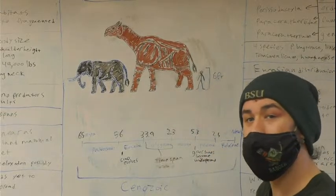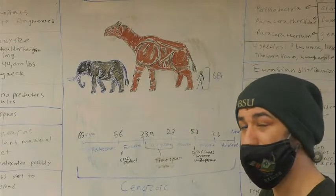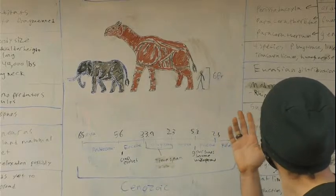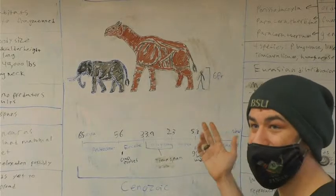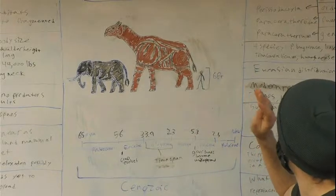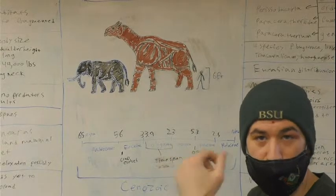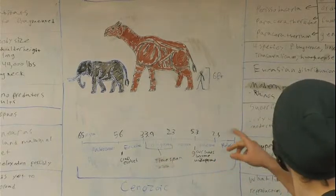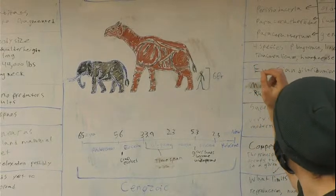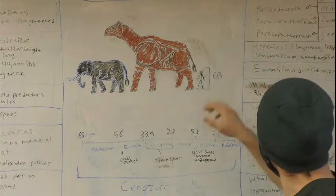So Paraceratherium lived roughly 34 to 23 million years ago and they're mammals. They're in the order Perissodactyla, the odd-toed ungulates. They are closely related to some of the other animals we've covered like the woolly rhino. They're in the family Paraceratheriidae and in the genus Paraceratherium and there are four species.